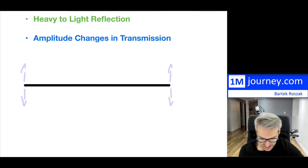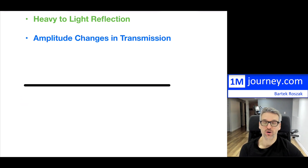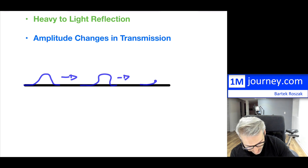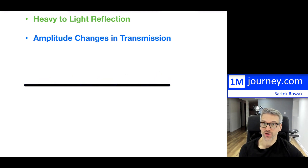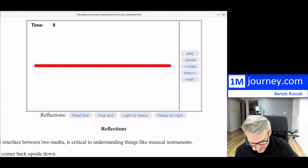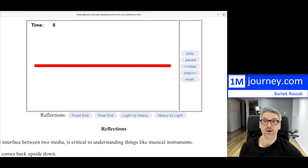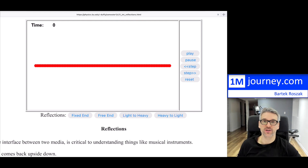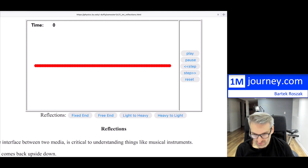Now the question is, what if we wanted to pass an actual pulse or a wave through? What would happen as it passes through and eventually gets towards the end? This simulation is from physics.du.edu — I'll put the link so you can run these simulations yourself.